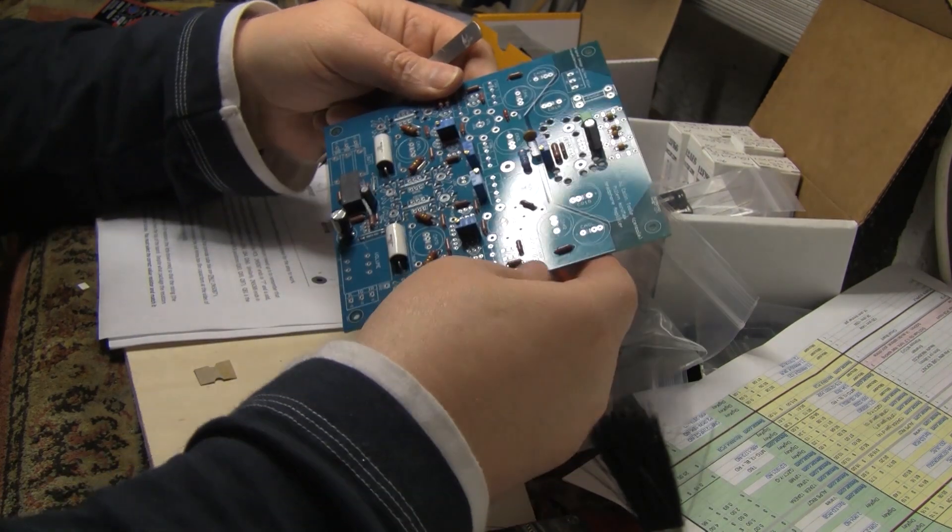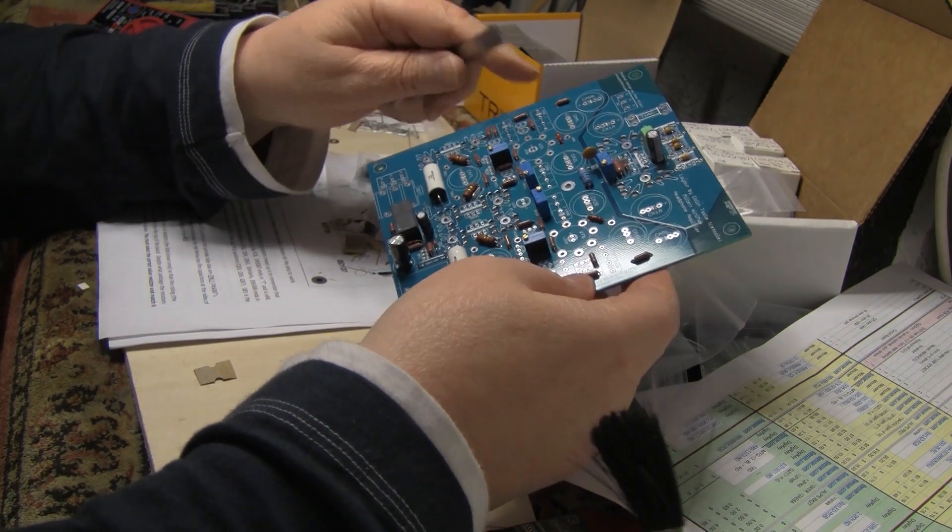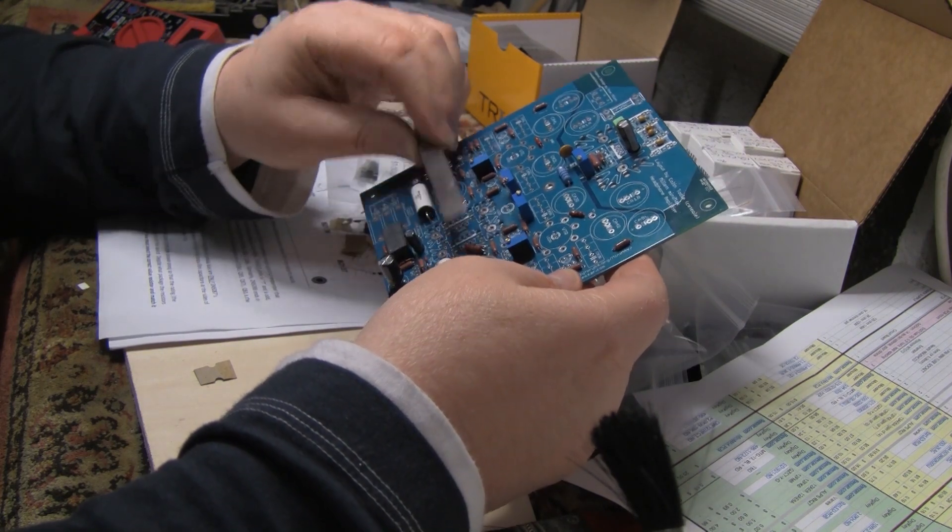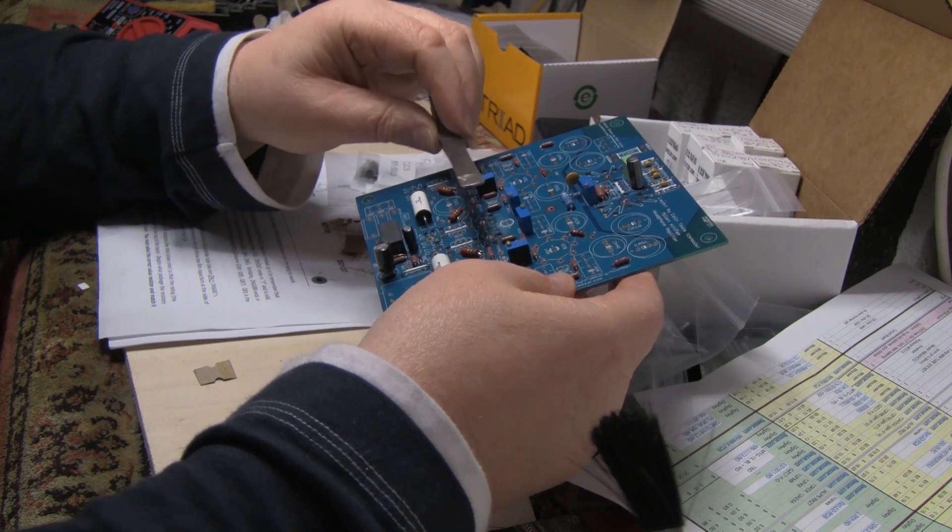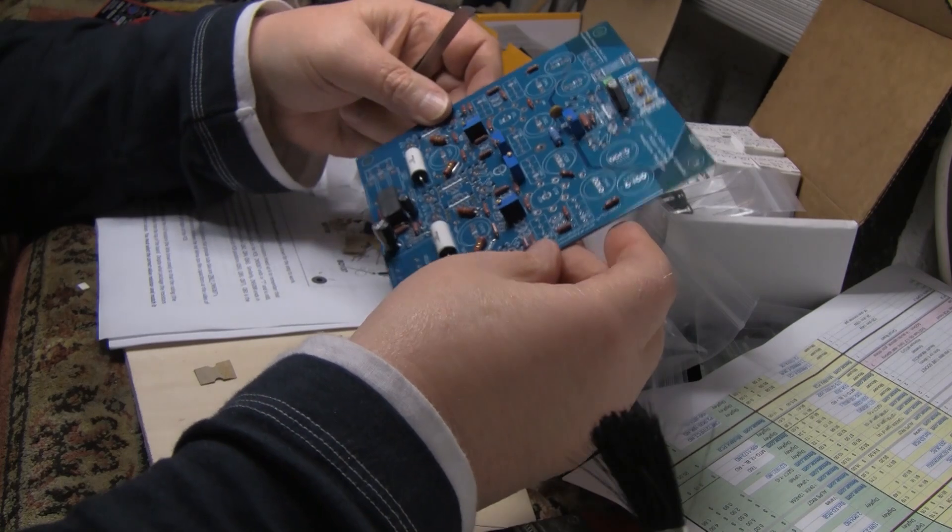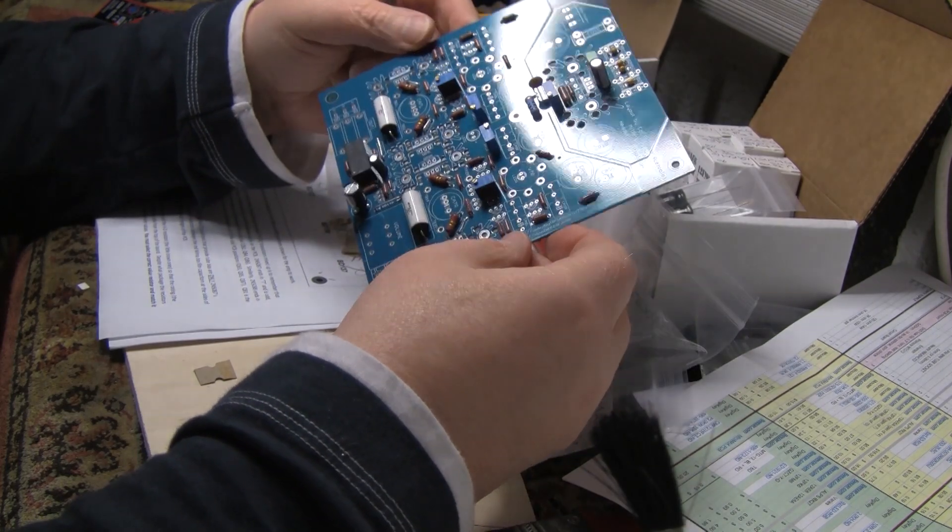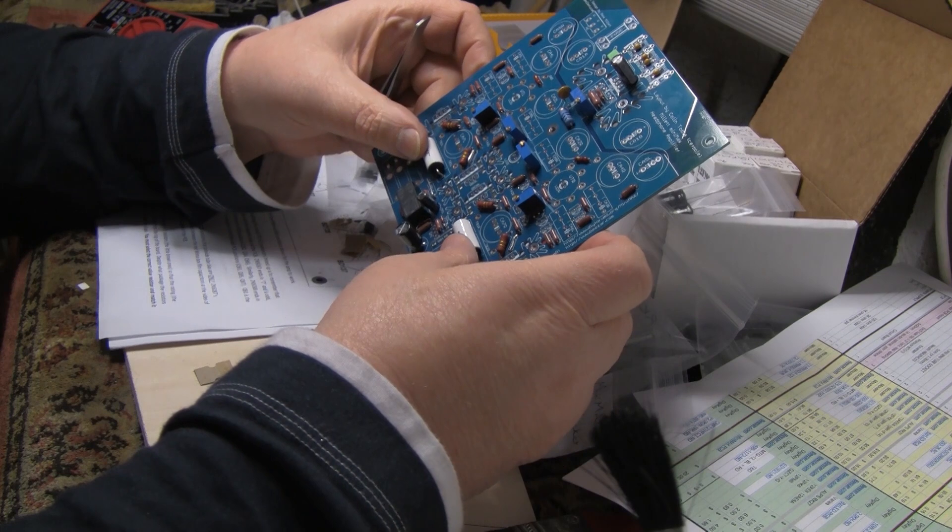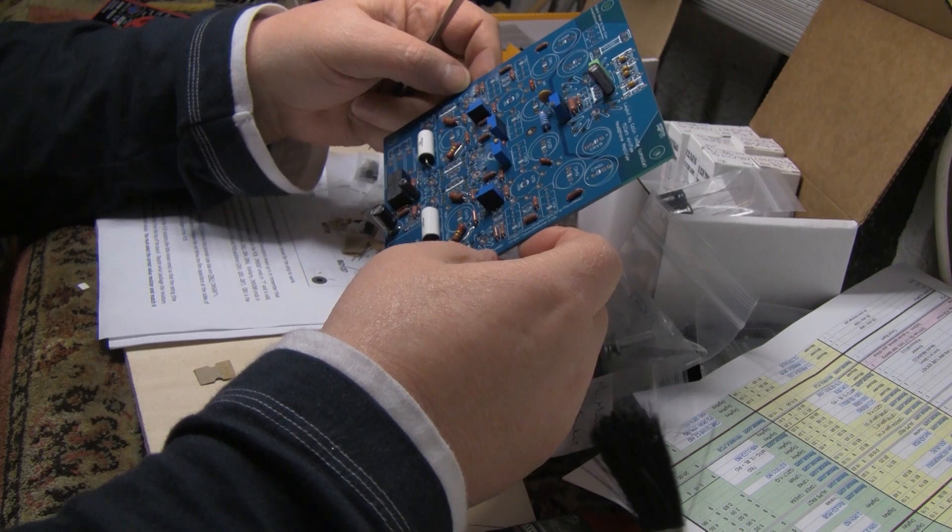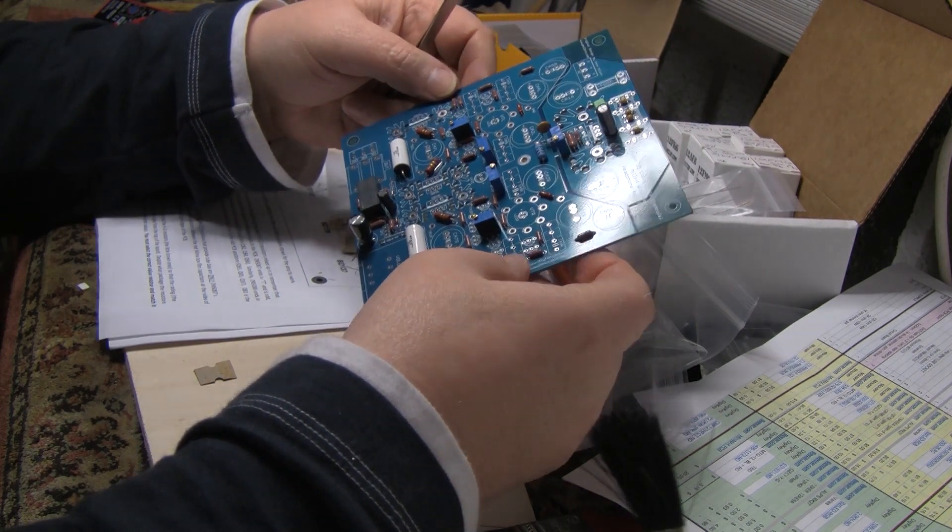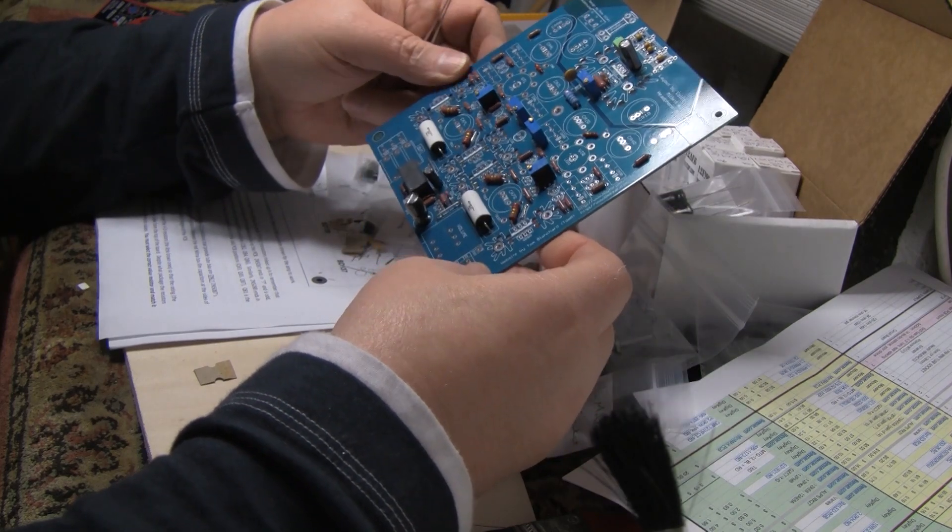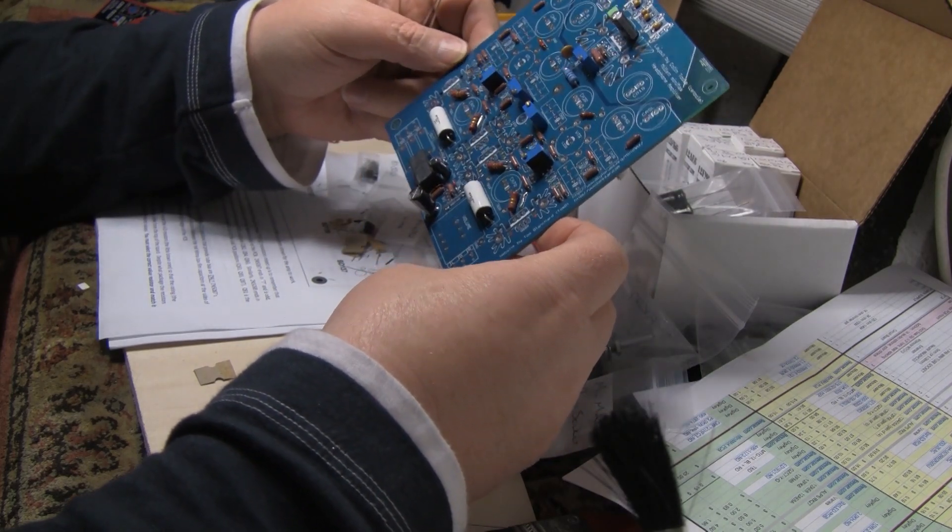The instructions basically say you install the components essentially in the order of their height. So you do the resistors first, then you do the diodes, and then you do the transistors, and then you build it up. Well, my training was install passives first and install semiconductors last, so I'm just gonna do that. So next I'll get on and install all the caps and stuff, and then we'll do the semiconductors.